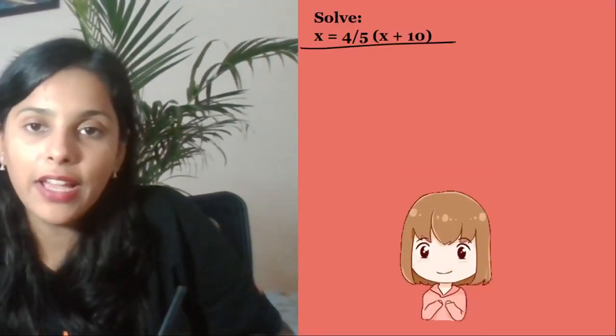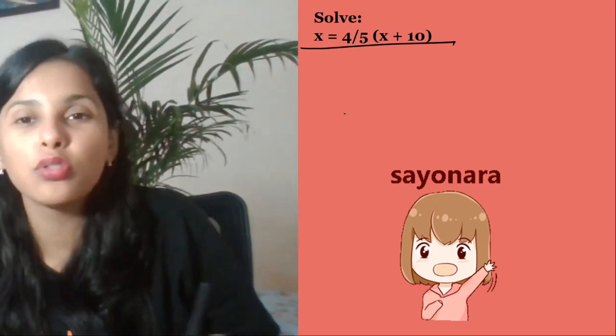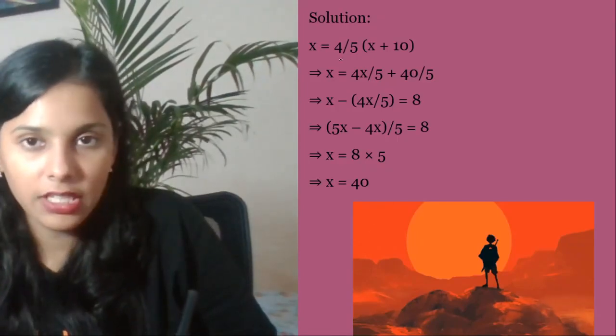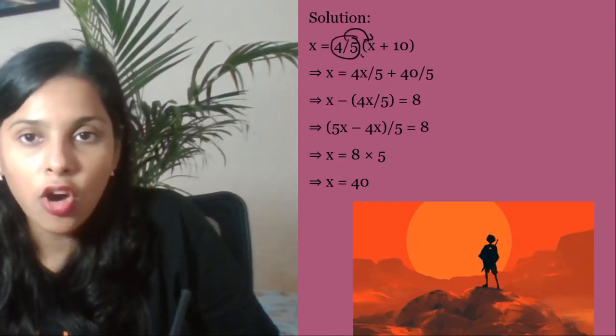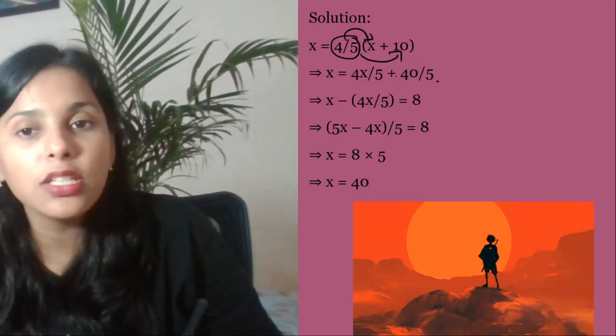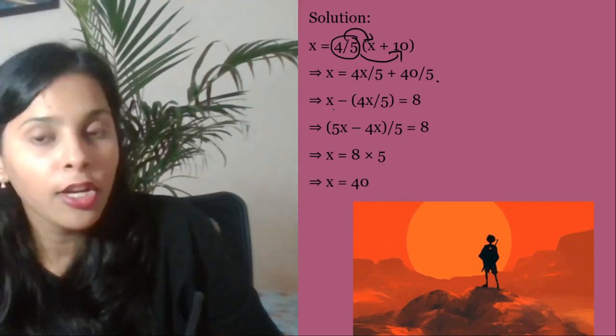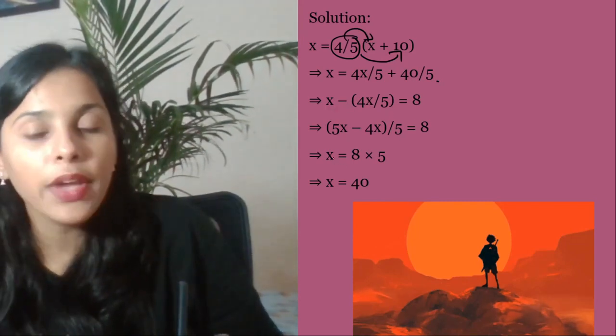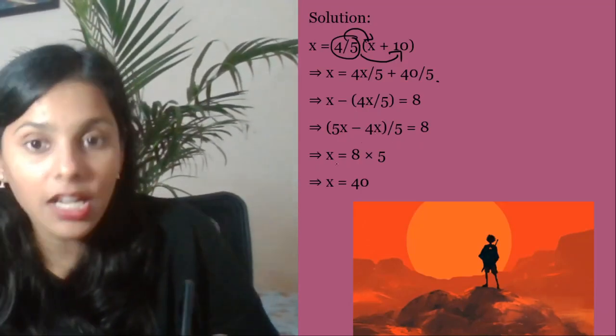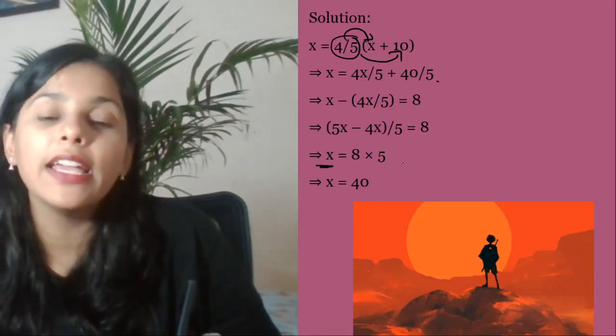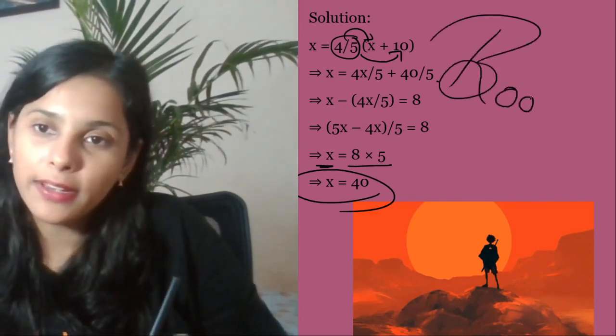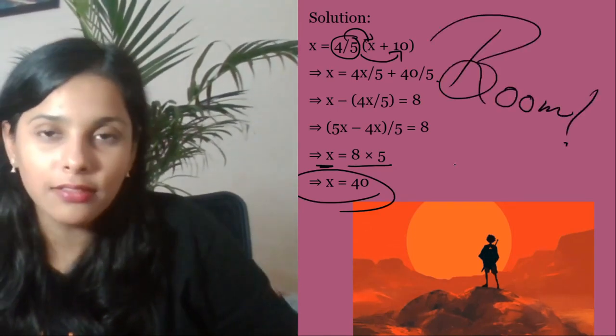Next question. Find the value of x by solving it. So x will be equal to 4x upon 5. Multiply 4/5 with x and 4/5 with 10, you get 4x/5 plus 40/5. Now to solve this, we take the x term to LHS. So x minus 4x/5 is equal to 8. X ki value should come out. Taking LCM: (5x minus 4x)/5 equals 8. So x equals - take 5 to RHS - it becomes 40. X is equal to 40. Boom date.